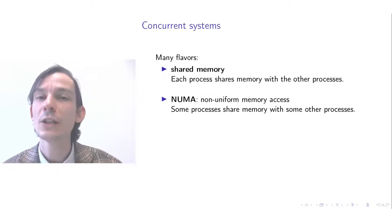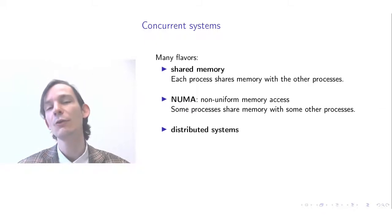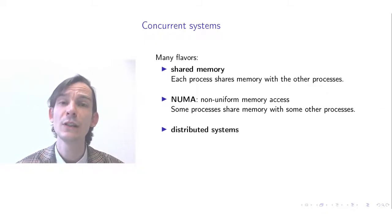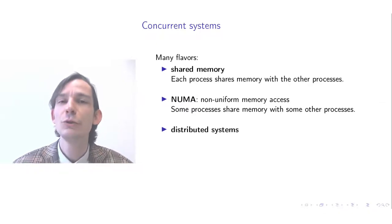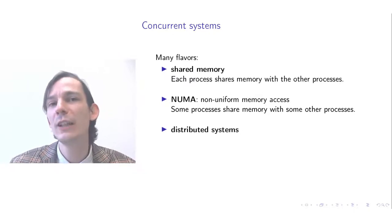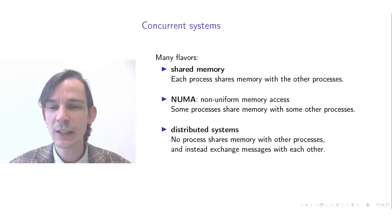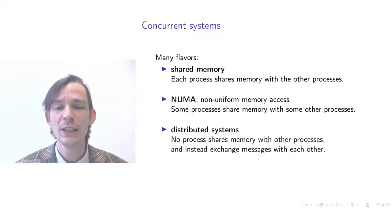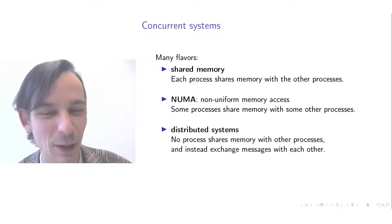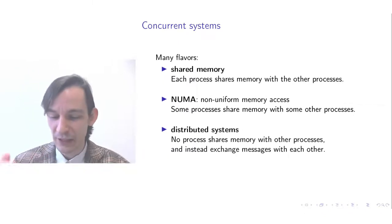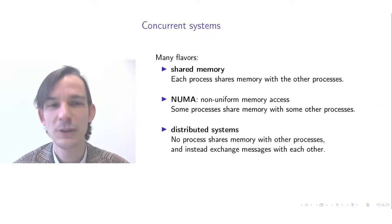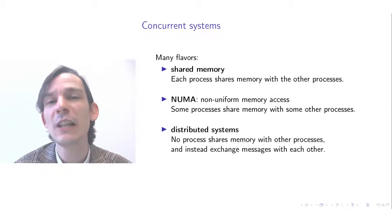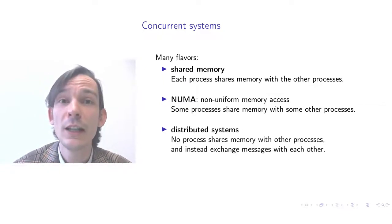Another way of thinking of concurrent systems is distributed systems, in which not only do you have processes competing to influence the program's outcome, but these processes are furthermore distributed in space. That means not everything is part of a single computer; the overall system consists of small parts linked together in a network. In that case, no process shares memory with other processes — every process running on a different part of the network is isolated. To communicate, you instead have to exchange messages with each other rather than modifying global variables.